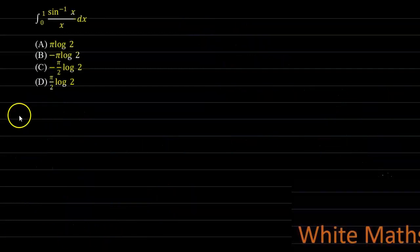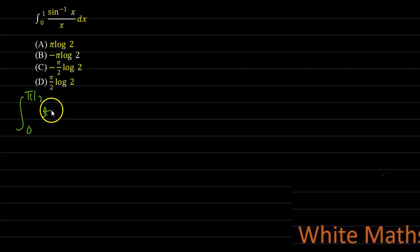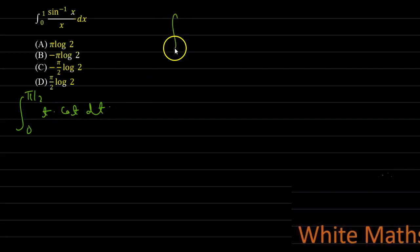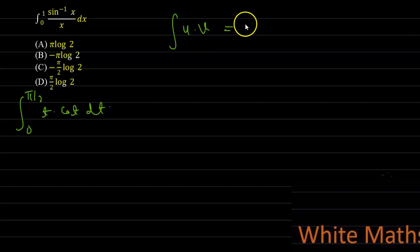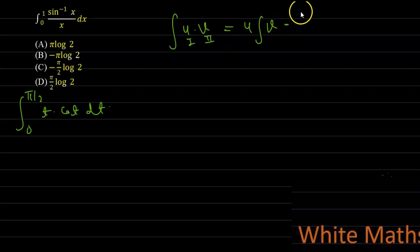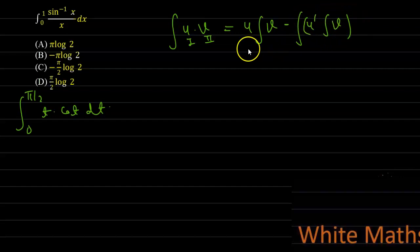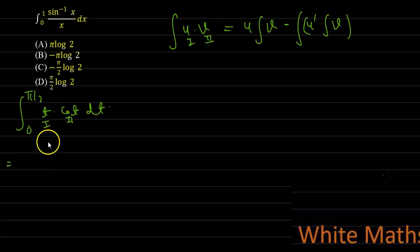To solve this integral, apply the UV rule. If u and v are two given functions written in product form, the integral is: first function as it is, multiplied by the integral of the second function, minus the integral of the derivative of the first function times the integral of the second function. Consider t as the first function and cot t as the second function.